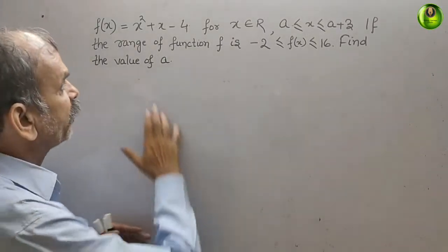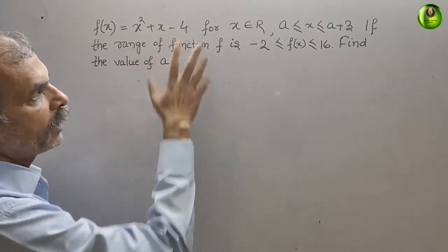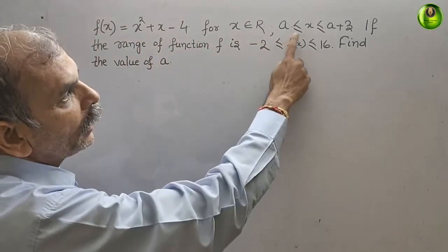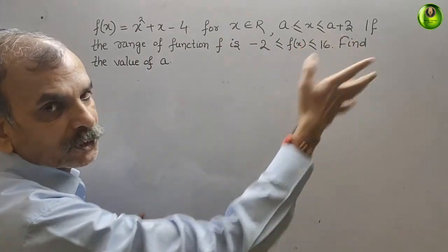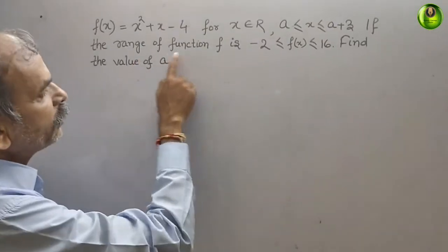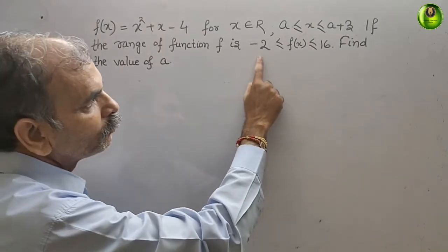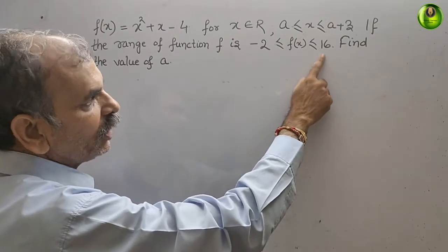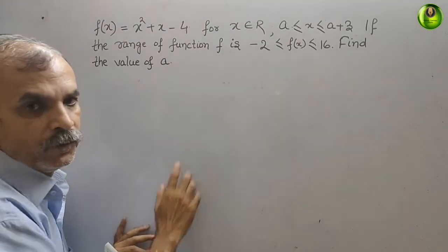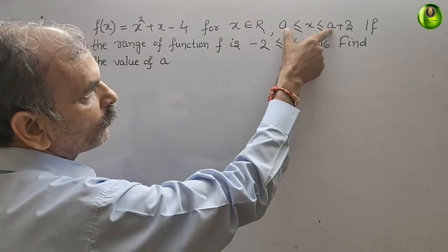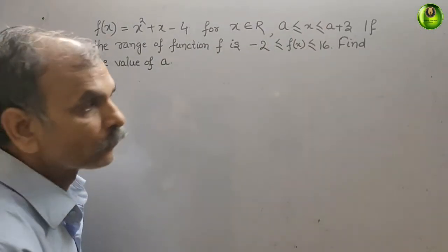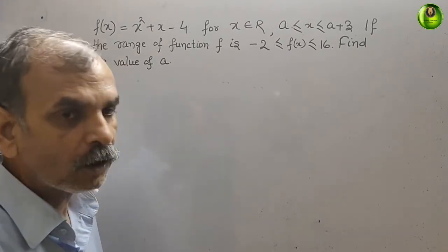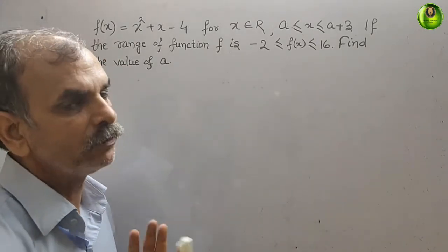The question gives f(x) = x² + x - 4, where x belongs to real numbers with domain a ≤ x ≤ a + 3. The range of the function f is -2 ≤ f(x) ≤ 16. We need to find the value of a.